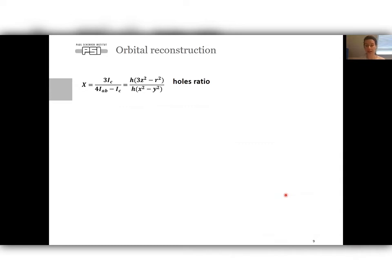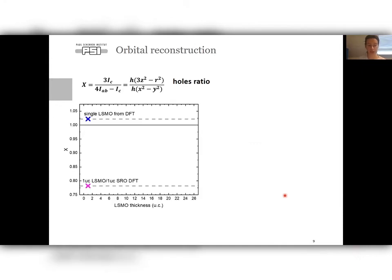In order to see a bigger picture and to quantify all XLD results I will use X parameter. It's calculated from XAS intensities for polarized light along C and AB axis. It expresses holes ratio at the eg orbital. It will be plotted as a function of LSMO and SRO thicknesses. First, on the plot you see the value predicted by DFT calculation for a single layer of LSMO and for the bilayers.